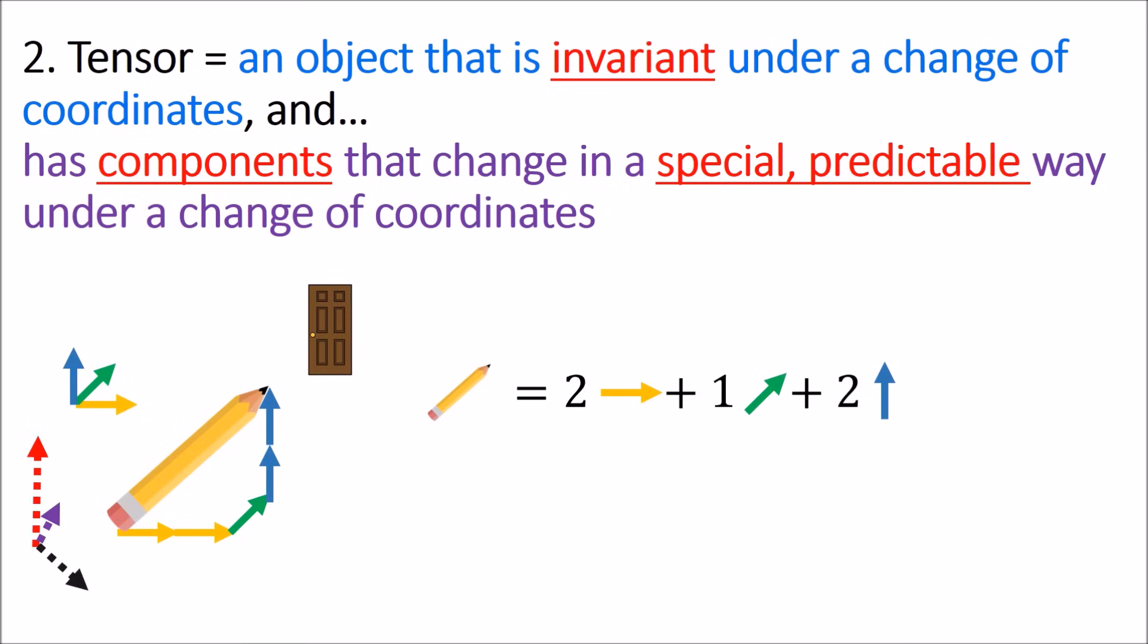I could just as easily introduce another coordinate system, like this, where the vectors are all different lengths, and they all sit at weird angles relative to each other. But mathematically, neither of these is more correct than another. They're simply just different choices.